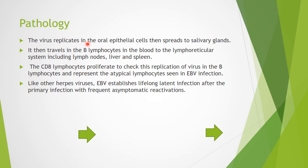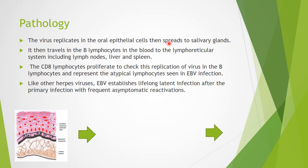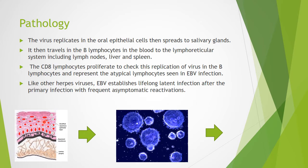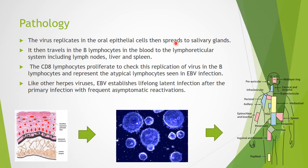The pathology: the virus replicates in the oral epithelial cells, then is expressed to the salivary gland. After the salivary gland, it travels in the B-lymphocytes in the blood, and travels to the lymphoreticular system, including the lymph nodes, the spleen, and the liver.